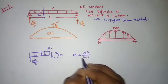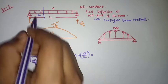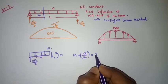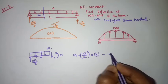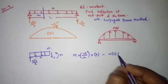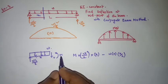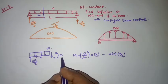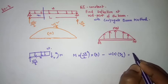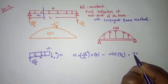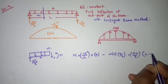...wL/2 times x distance, this is from x, so this is x, and minus w·x times x/2. So this is the calculation for the moment. This can be written as — if we take wx/2 as common — then it becomes wx/2 times (L minus x).